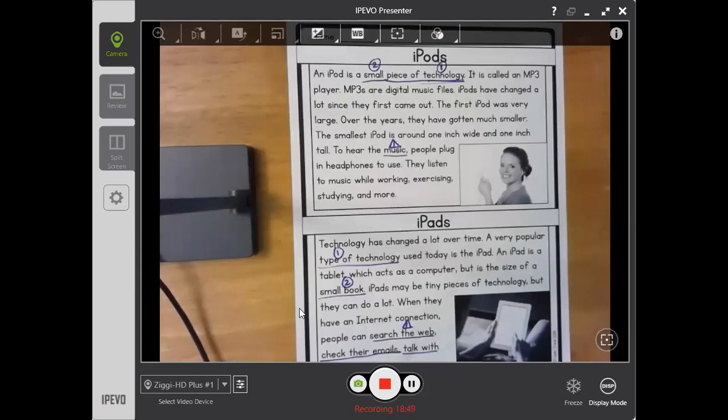Comparing is when we talk about how things are the same, and contrasting is when we talk about how things are different. Let's read our articles about iPods and iPads, and then we'll talk about how they are the same and how they're different.